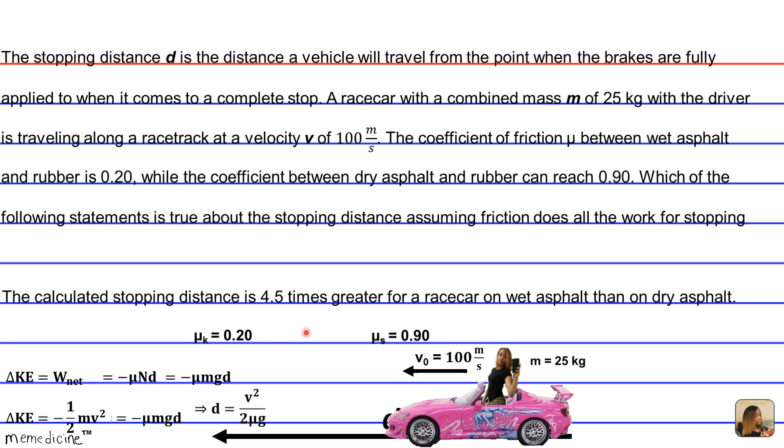So by default, we're left with answer choice D, which says that the calculated stopping distance is 4.5 times greater for a race car on wet asphalt than one on dry asphalt. We know that this is true because if you put 0.2 here in the denominator and compare that to the result of putting 0.9 in for the coefficient of static friction, this result would be 4.5 times greater than the result with static friction. The result using kinetic friction. So the ratio of 0.9 to 0.2 is 4.5. The smaller coefficient will have a 4.5 times greater stopping distance, and that makes sense.